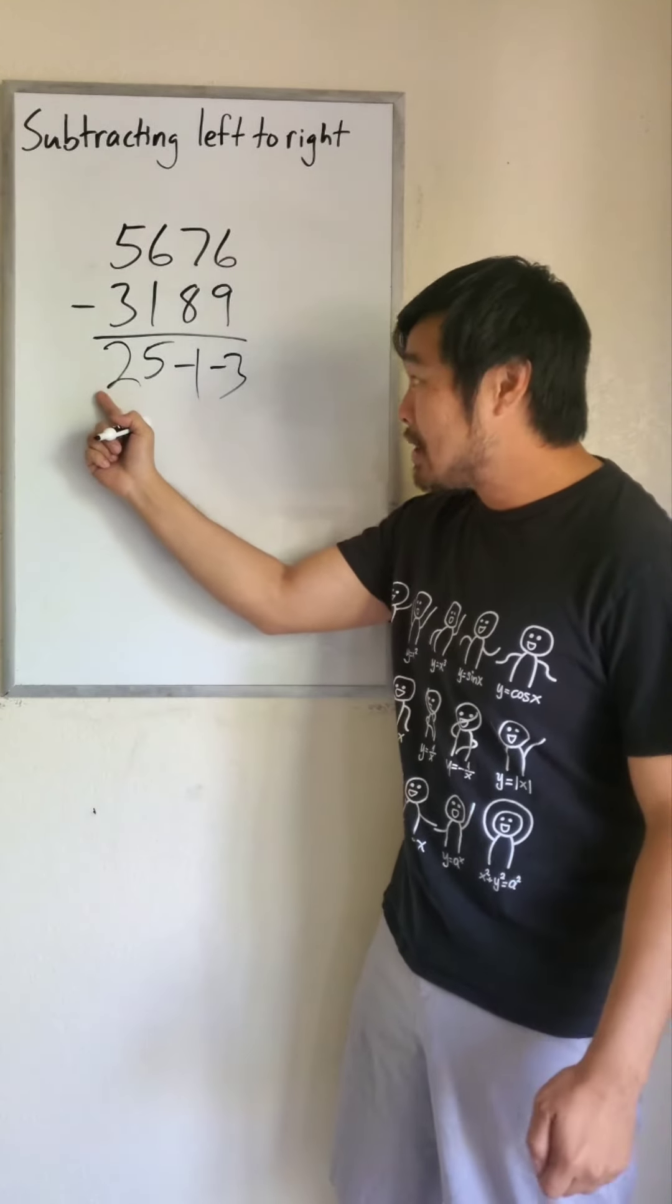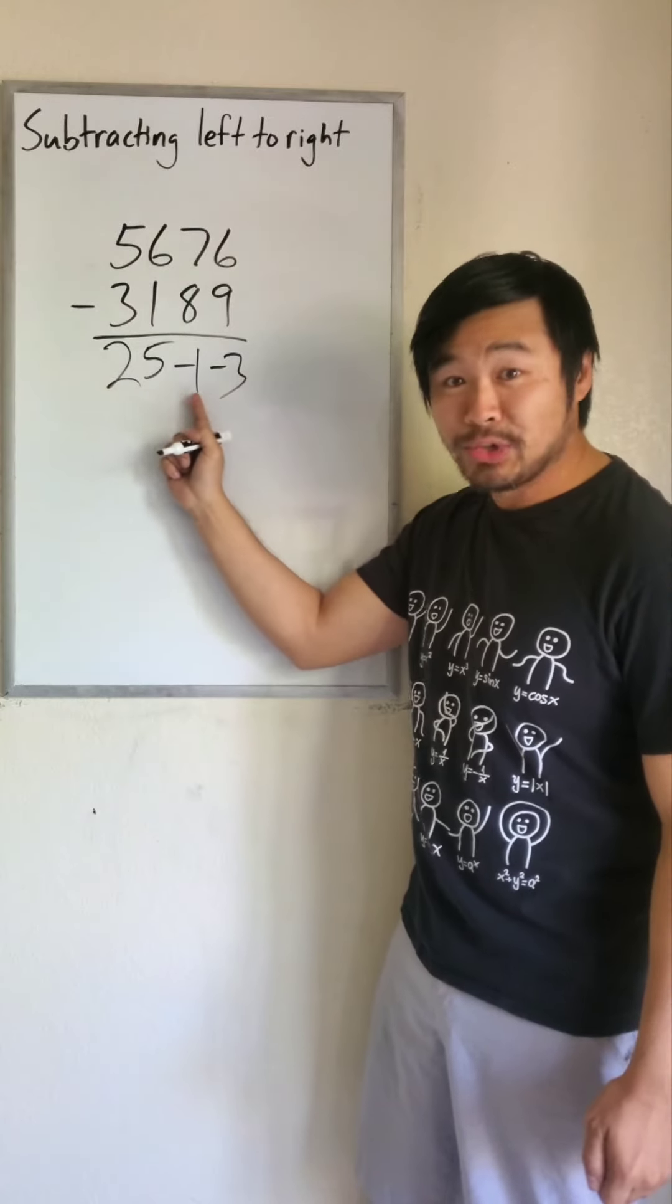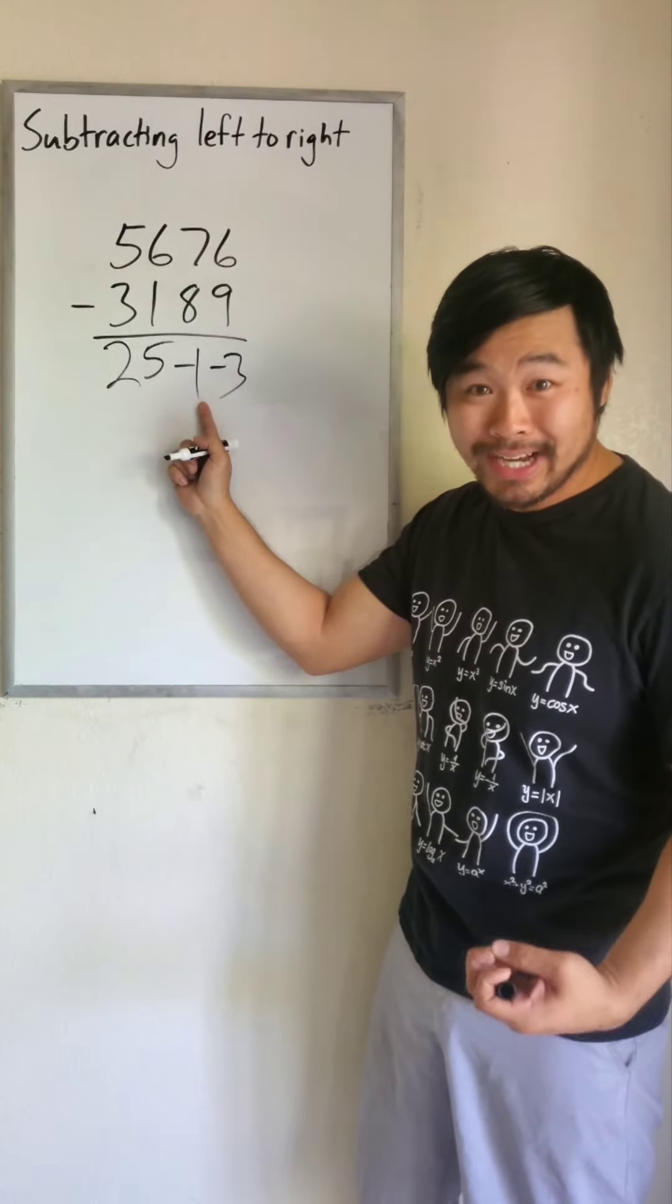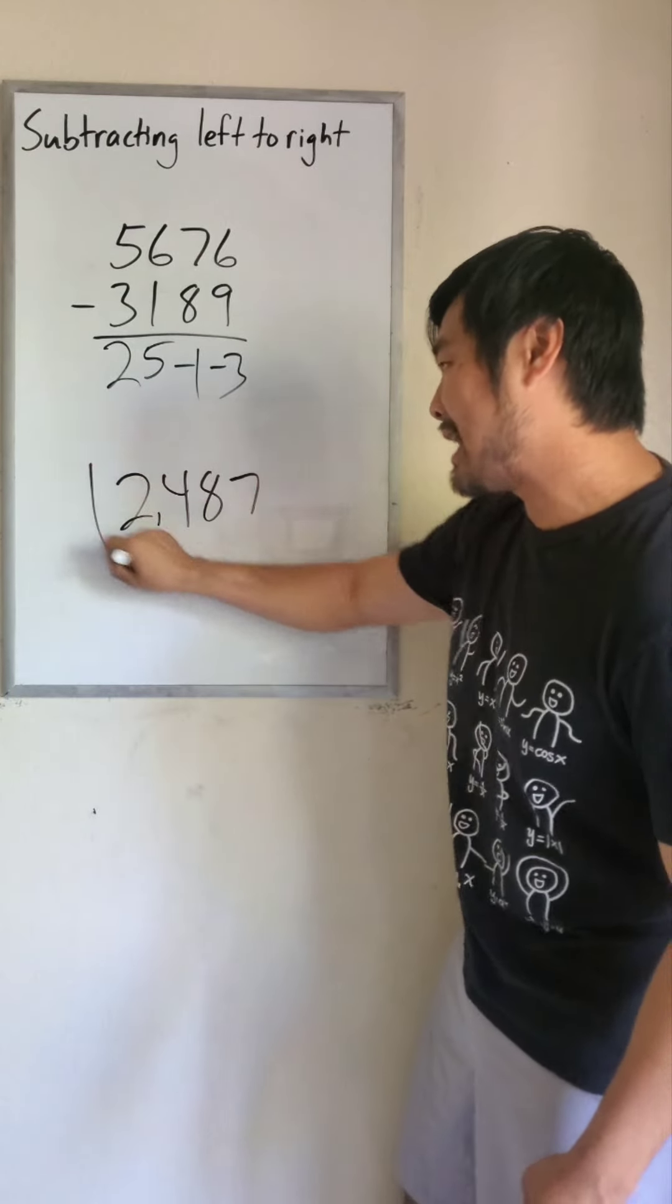So I'm reading this as 2,500 minus 10 minus 3. 2,500 minus 10 is 2,490. Minus 3 from that, the answer is 2,487.